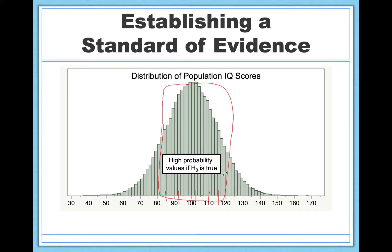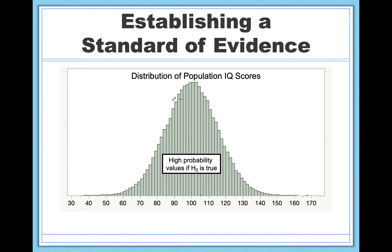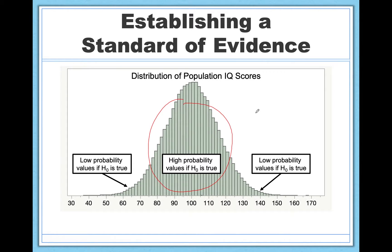We already know that within one standard deviation on either side of the mean contains 68% of people. Within two standard deviations, 95%, and within three, 99.7% — then we're getting into extreme stuff. This central region is all very likely, so it represents a high probability that the null is true. But out here at the extremes there is a very low probability that the null is true.